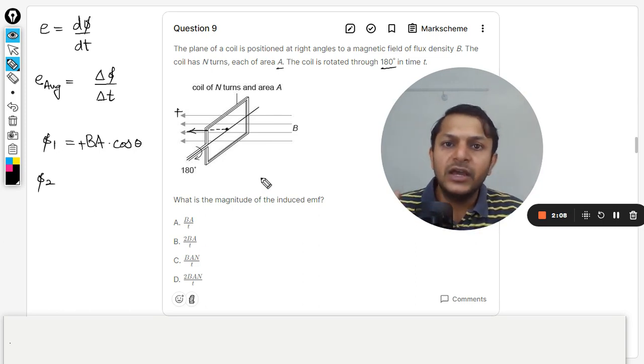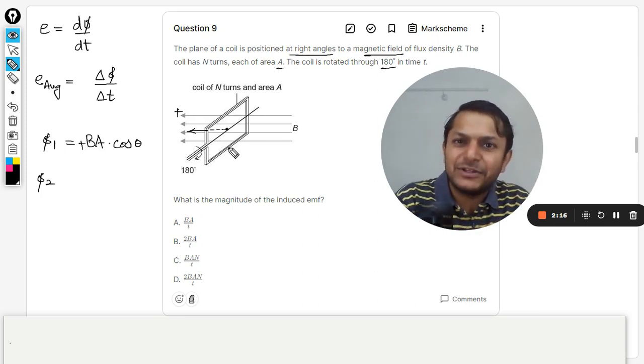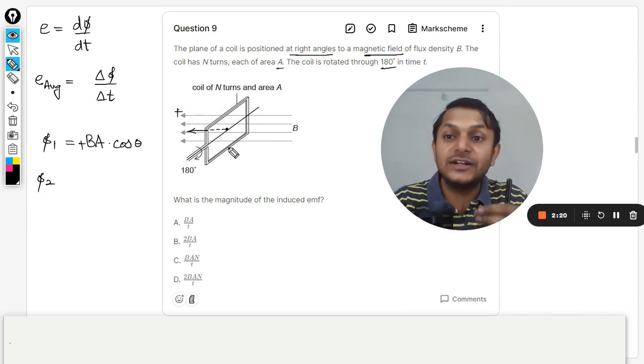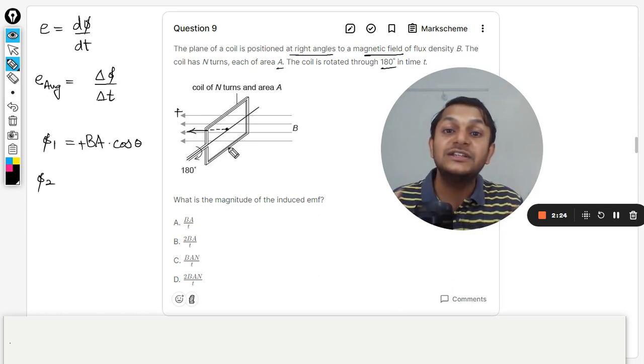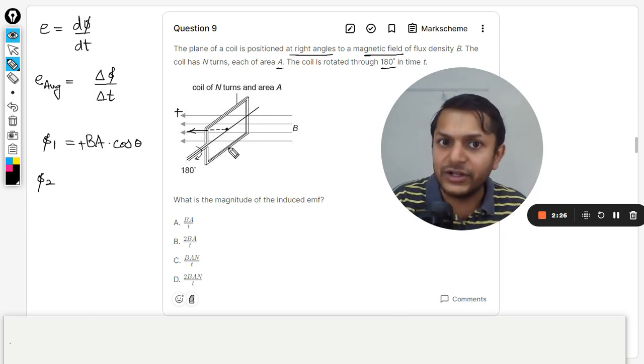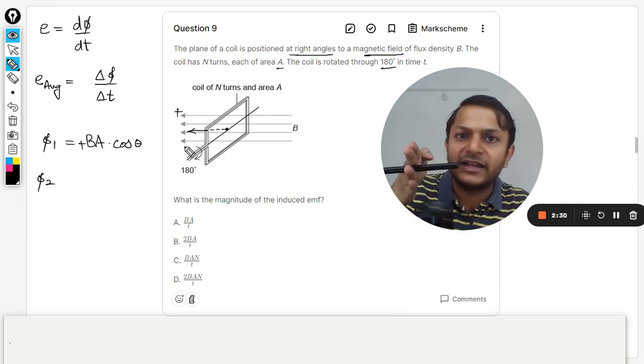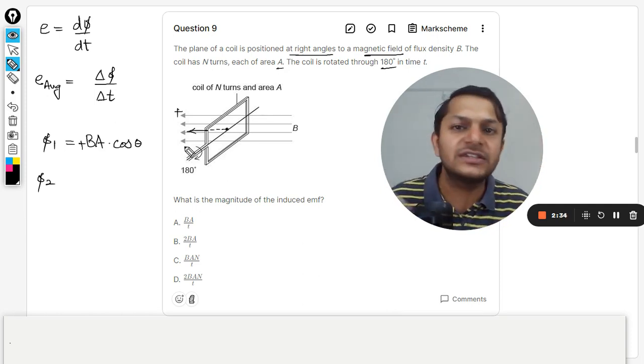Now what is phi 2, and obviously there will be cos theta. Now there is a problem—what is the theta here? You see, they say that the plane is at right angles to the magnetic field. So it's highly susceptible here or I can say deceptive that students will be taking the angle to be 90 degrees, but no, this is not 90 degrees. The angle is zero degrees.